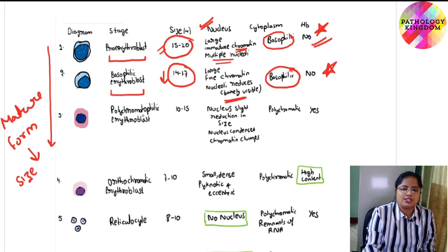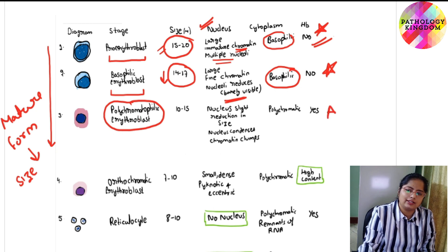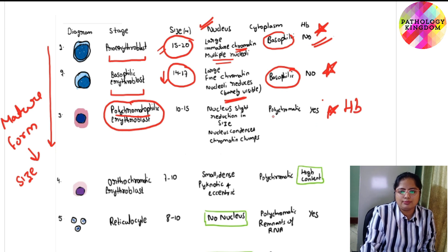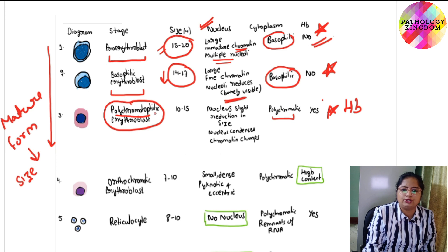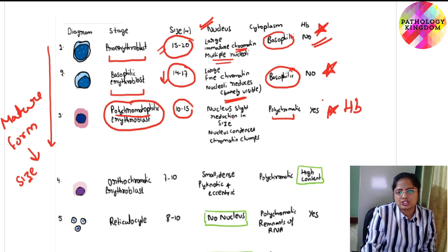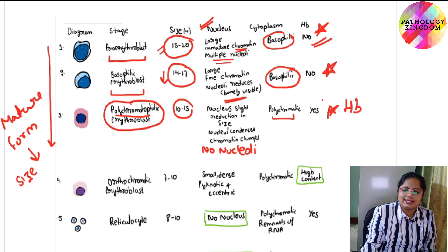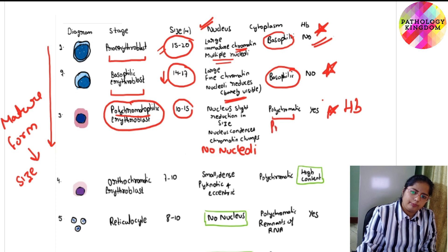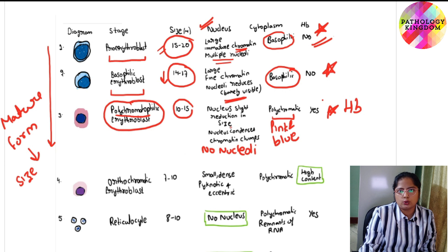The next stage is polychromatophilic erythroblast. This is the stage at which hemoglobinization starts. Because of hemoglobin, the color of the cytoplasm becomes polychromatic — that is pinkish-bluish, many colors — and that's why it is known as polychromatophilic. The size further decreases to between 10 to 15 microns. The nucleus shows slight reduction in size with no nucleoli; chromatin condenses and clumps. The cytoplasm is polychromatic, shades of pink and blue.